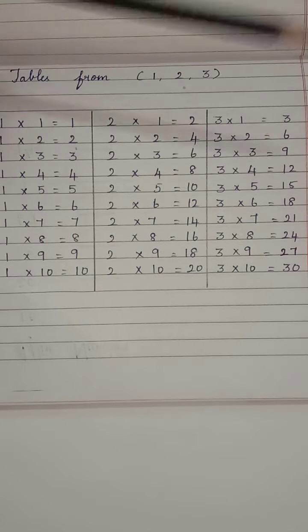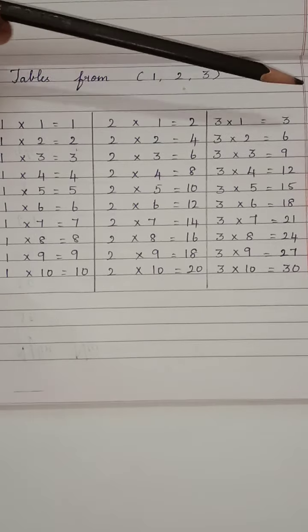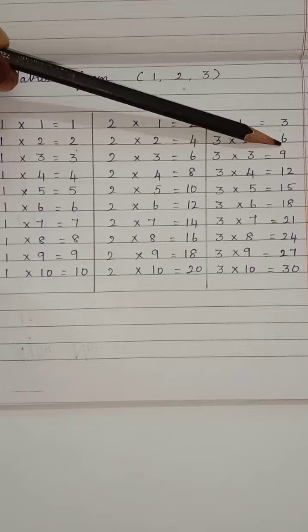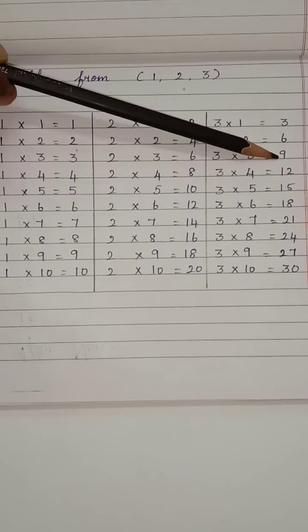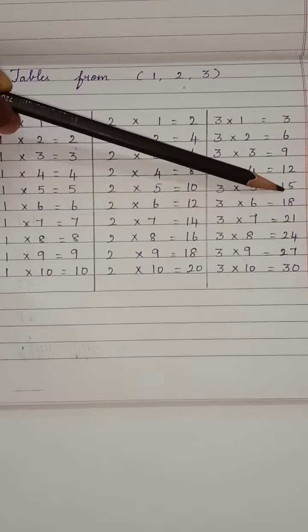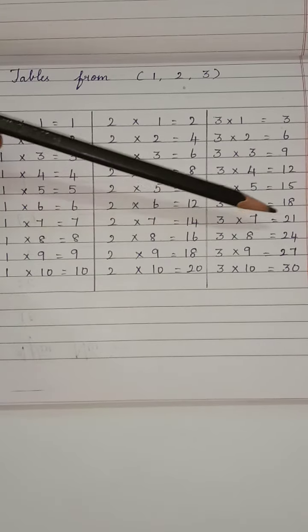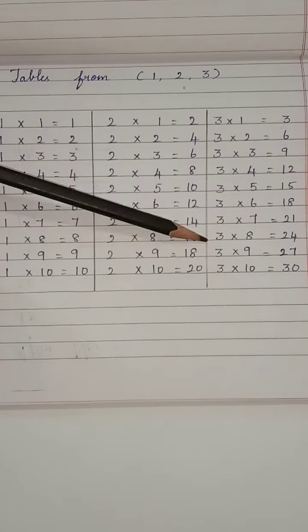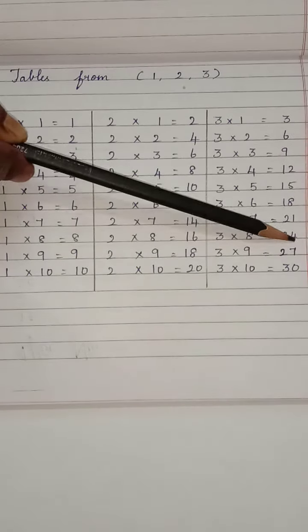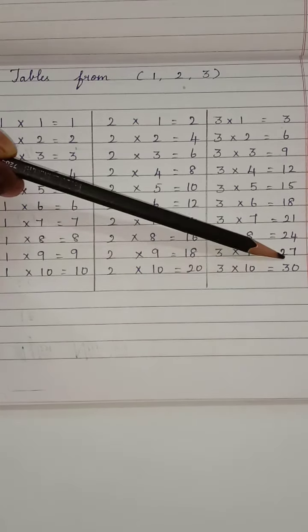Come to 3 table. 3 1s are 3, 3 2s are 6, 3 3s are 9, 3 4s are 12, 3 5s are 15, 3 6s are 18, 3 7s are 21, 3 8s are 24, 3 9s are 27, 3 10s are 30.